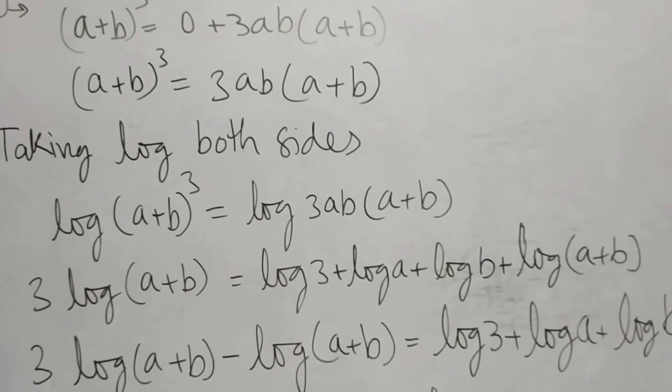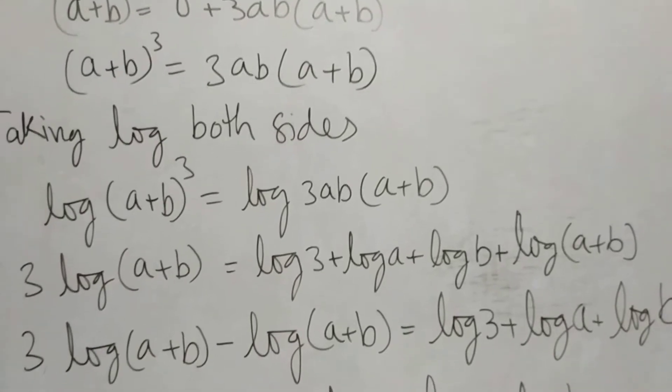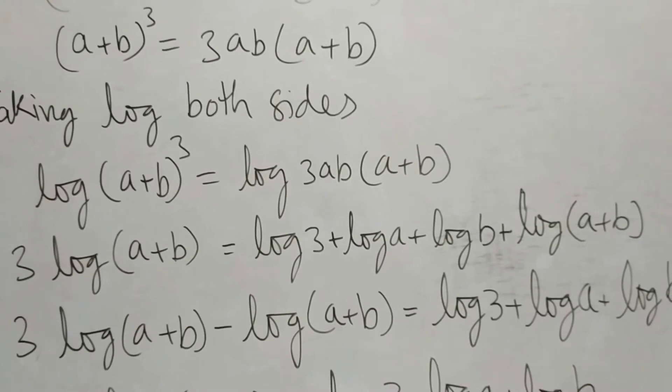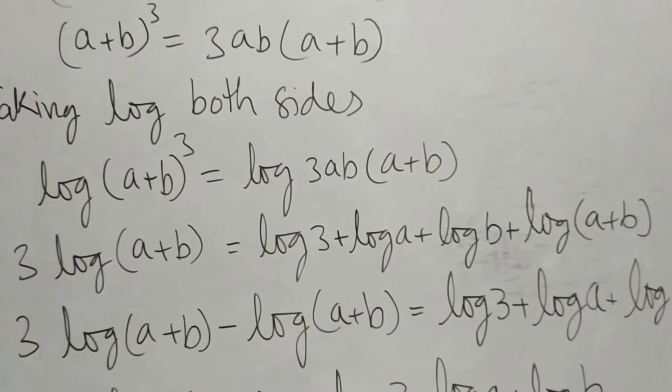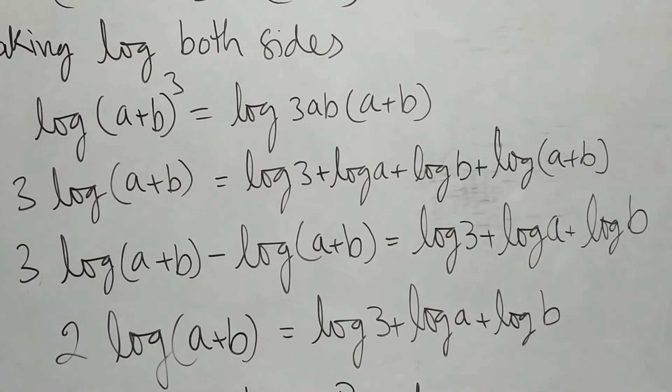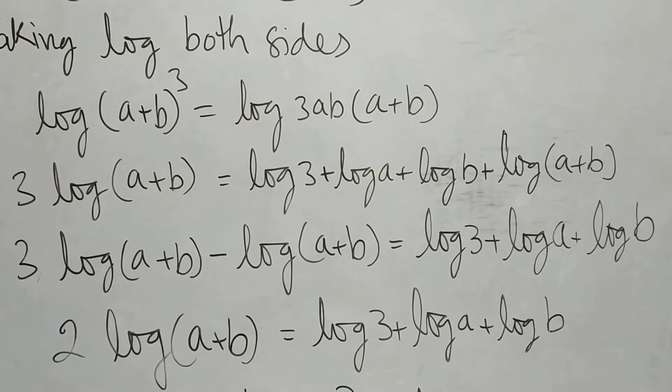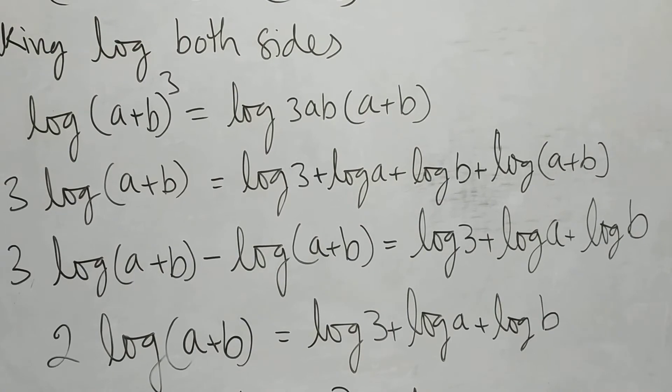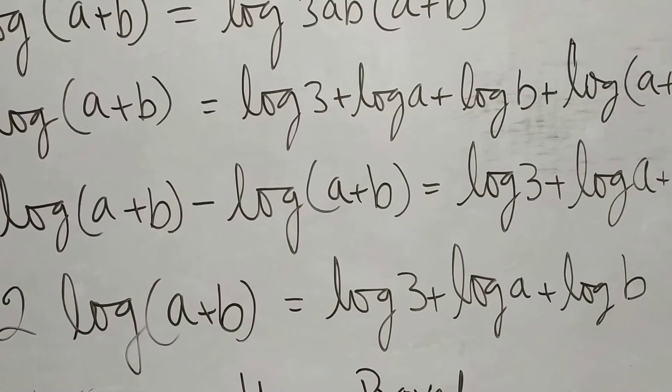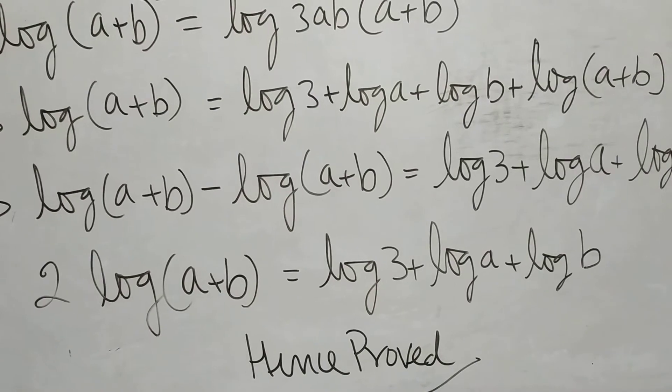Now log(a+b) and log(a+b) are on both sides, so we have taken this log(a+b) from right side to the left hand side. And the equation becomes: 2log(a+b)=log 3+log a+log b.